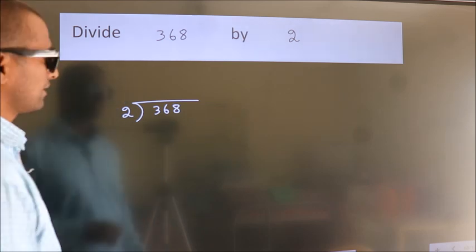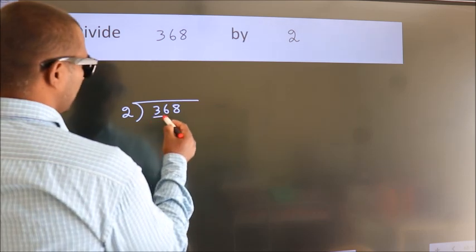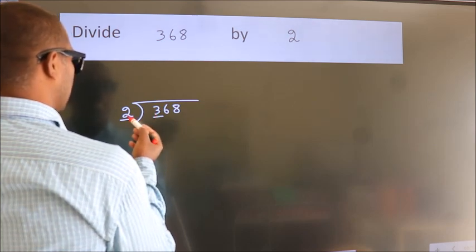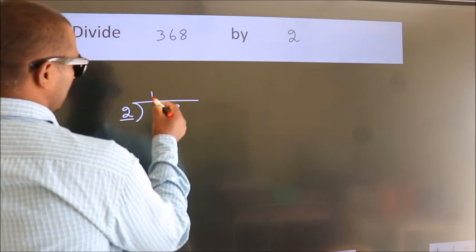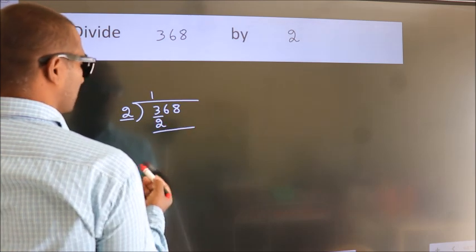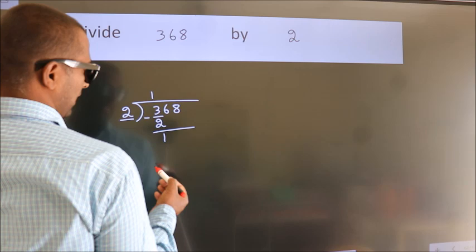Next, here we have 3. Here 2. A number close to 3 in the 2 table is 2 1s 2. Now we should subtract. We get 1.